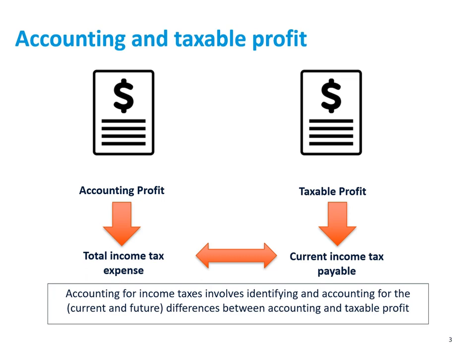We have differences in accounting profit and taxable profit, and because of that we have differences in income tax expense under IFRS and taxes payable under tax rules. What we do via accounting for income taxes is identify the reasons why these two are different, and then account for those differences — looking at the underlying cause and accounting for current and future differences between the two.